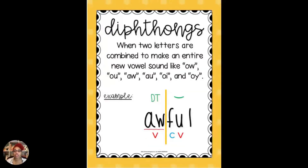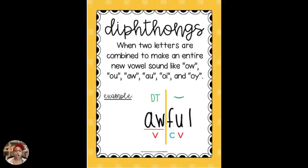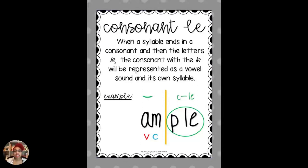Diphthongs are when two letters are combined and they make an entirely new vowel sound, such as the 'oi' sound in 'toy' or 'aw' in the word 'awful.' Next we have consonant-LE, which is when a syllable ends in a consonant and then the letters LE. In this case, the consonant with the LE is represented as a vowel sound and becomes its own syllable — such as in the word 'ample,' where 'ple' becomes its own syllable.